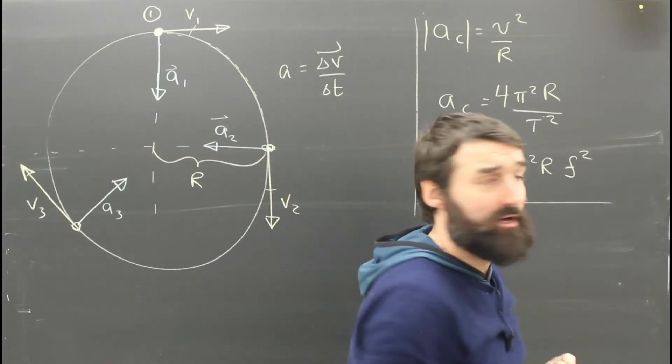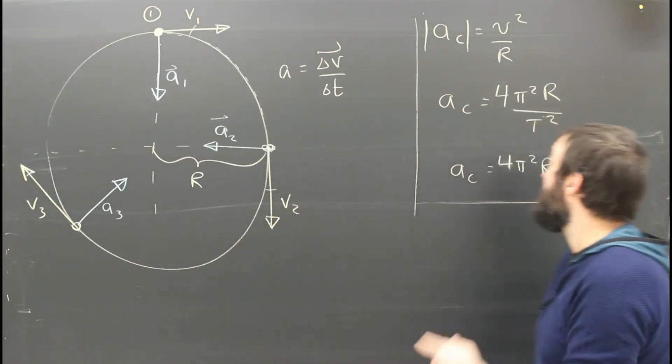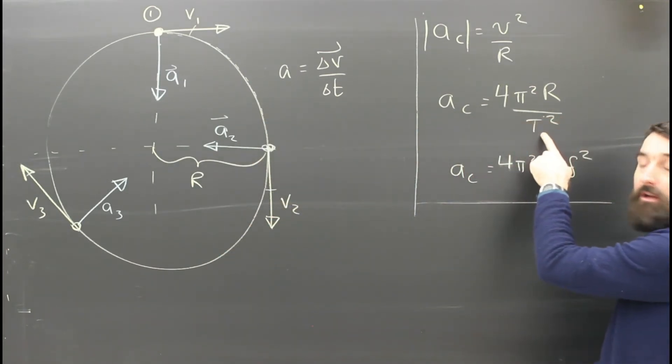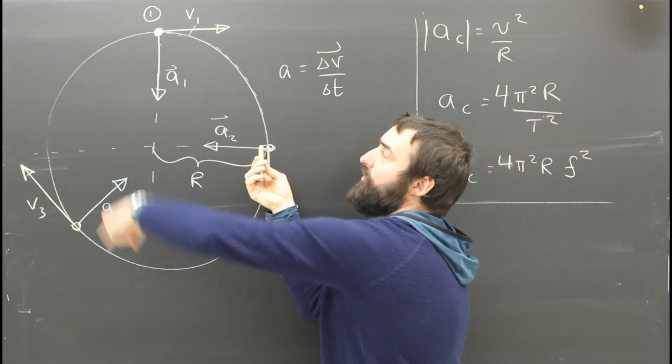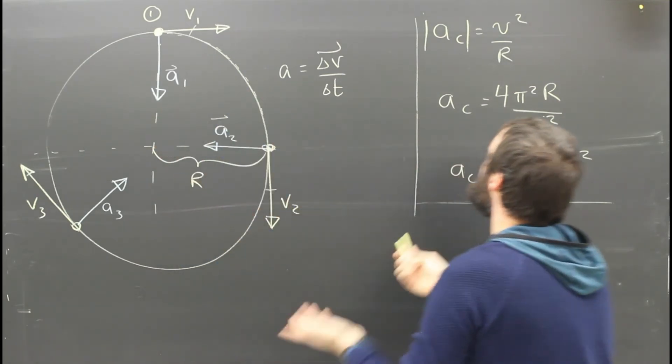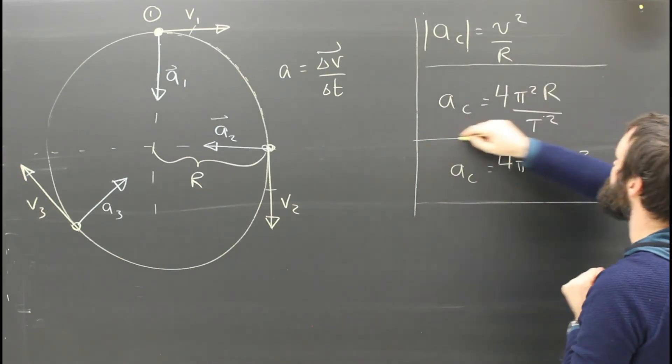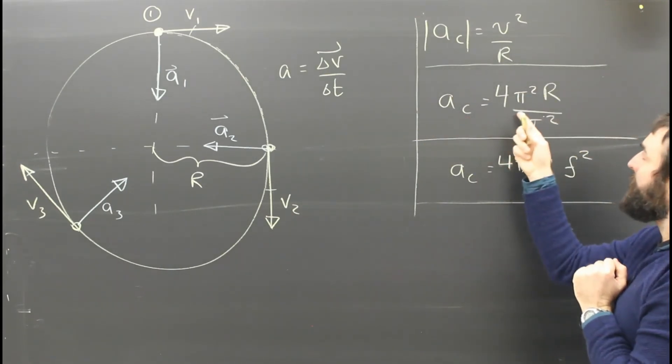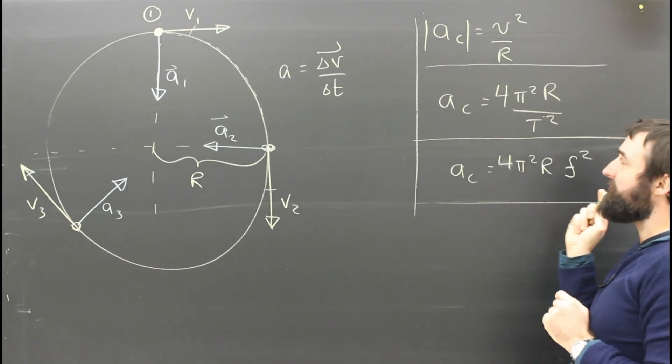Sometimes though, we don't know the speed of the object. Sometimes we know how long it takes to do a full circle. We call that the period, T. Using a little bit of math, you can show that if you know the distance it traveled, which is 2πr, and you know the speed v, if you shove those things in for v and square it, you should be able to see how you can get this second version of the formula. 4π²r over T². Try it if you're not sure, but you should be able to do it.